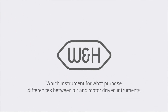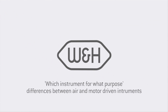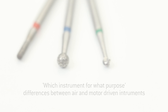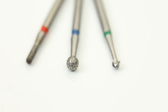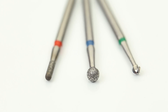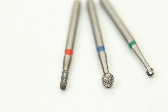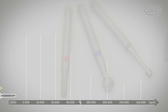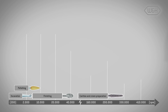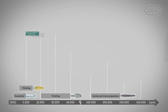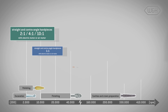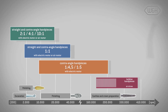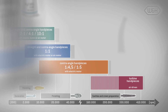Which instrument for what purpose? There are differences between air and motor driven instruments. Different rotary instruments are used depending on the particular application. The optimal speed for the application, as described by the rotary instrument manufacturer, can be achieved by the different straight and contra angle handpieces and turbine handpieces.